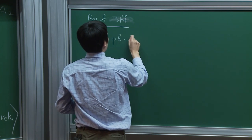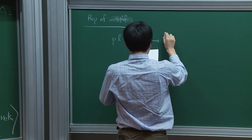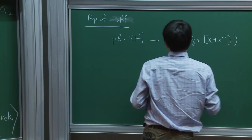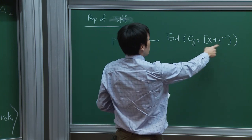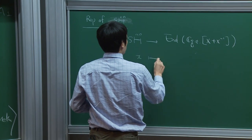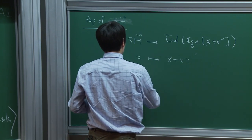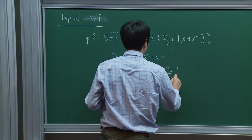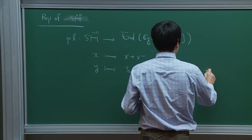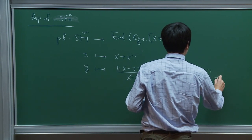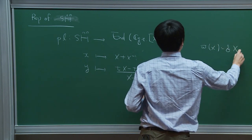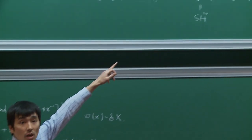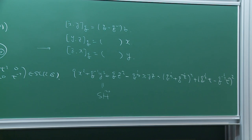There is a polynomial representation which sends the spherical DAHA to the endomorphism ring of symmetric functions of rank one: C(Q, T), where X + X⁻¹ is the variable. X maps to X + X⁻¹, and Y maps to the MacDonald operator: T · (X − T⁻¹X⁻¹)/(X − X⁻¹) · shift + T⁻¹ · (X − TX⁻¹)/(X − X⁻¹), where the shift operator acts on X by multiplying by QX. Z similarly gives a difference operator from the relation. This is called the MacDonald difference operator.